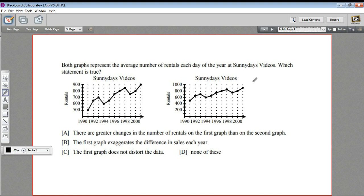So let's see if we can find the true statement. A says there are greater changes in the number of rentals in the first graph than on the second graph. I don't think that's true—I don't think the numbers are different. If we look at both of these in 1990, they're both at 500. In 1992, 650. So it looks like the data is actually the same; it just looks bigger here.